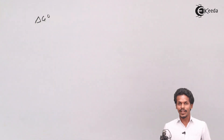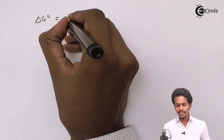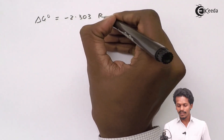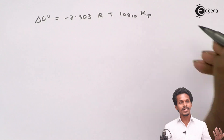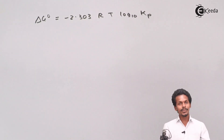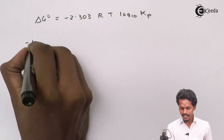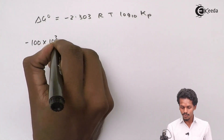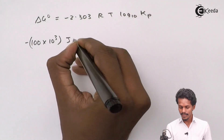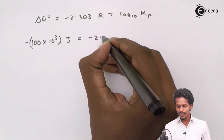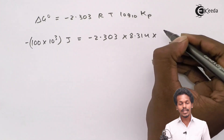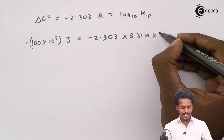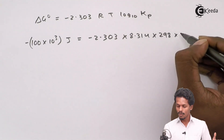The formula for standard Gibbs free energy change is: ΔG° = −2.303 RT log Kp. In this case, ΔG° is given as minus 100 × 10³ joules per mole. R is the gas constant with a value of 8.314, and the temperature is 298 Kelvin. Substituting these values, we get: −100 × 10³ = −2.303 × 8.314 × 298 × log Kp.